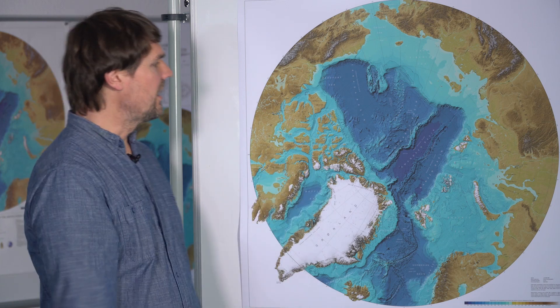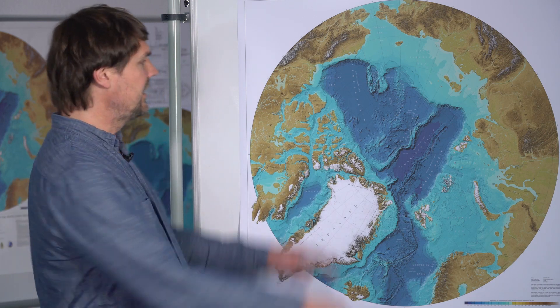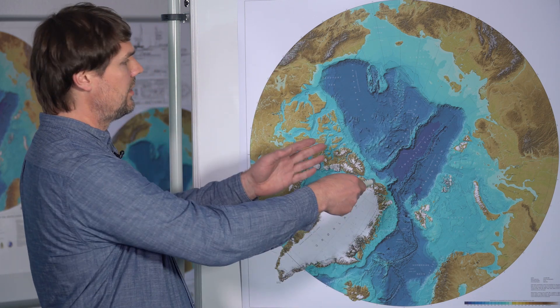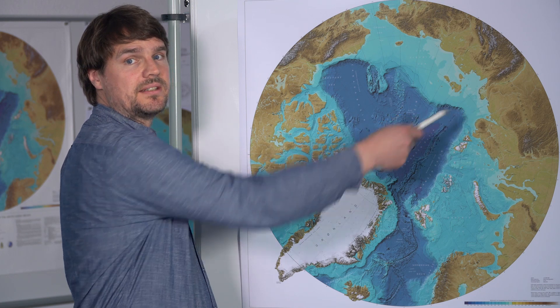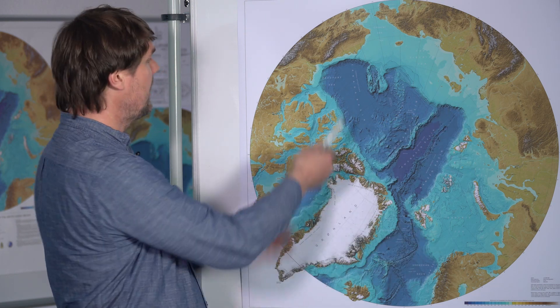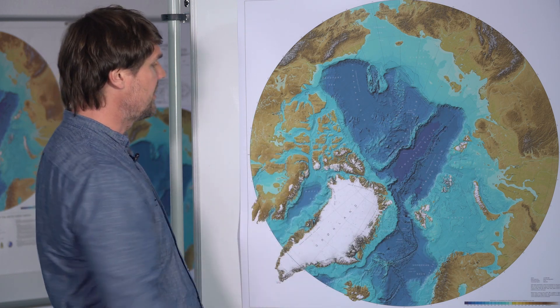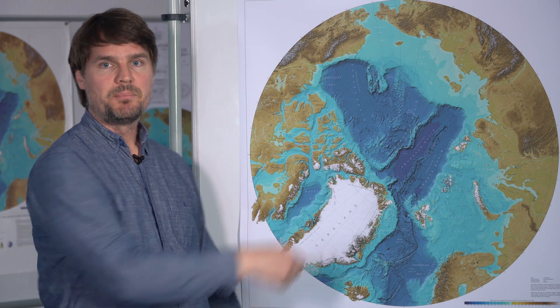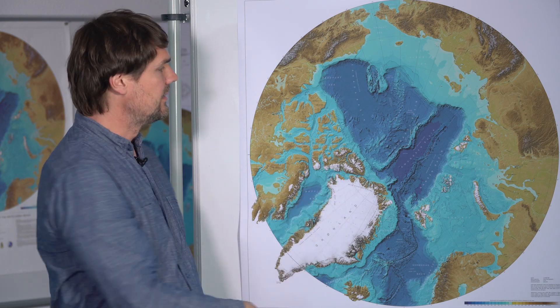Here you can see a map of the Arctic Ocean. It's basically located between Asia on one side, Europe on the bottom right, and on the left you can see North America. That big white thing here, that's Greenland.